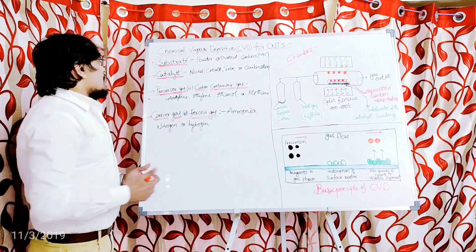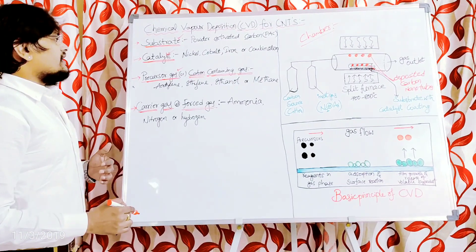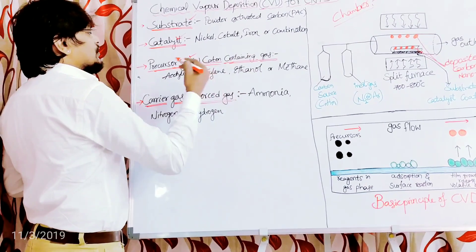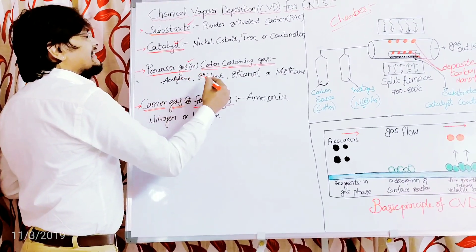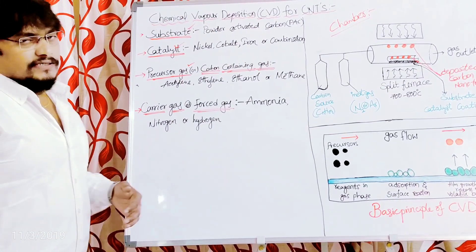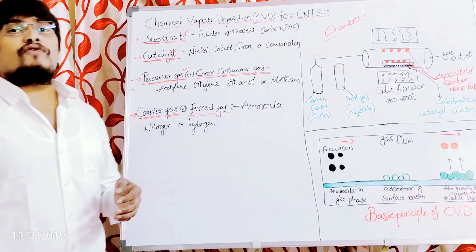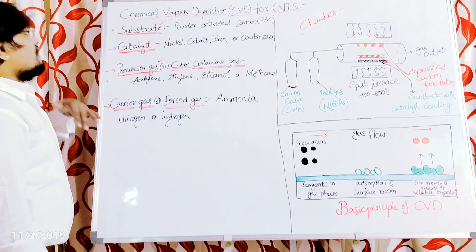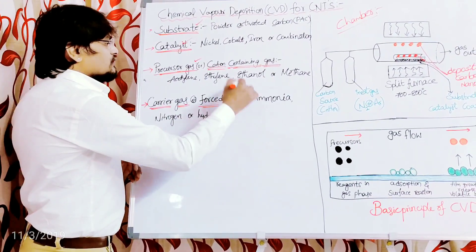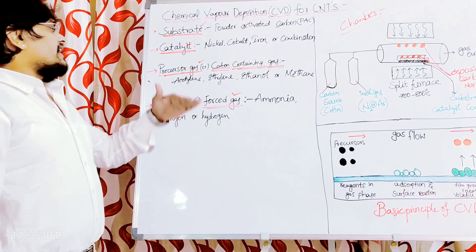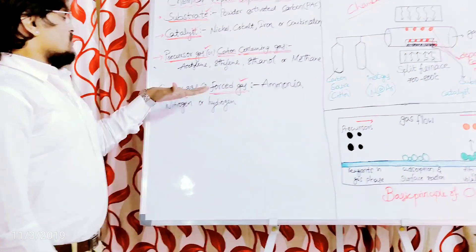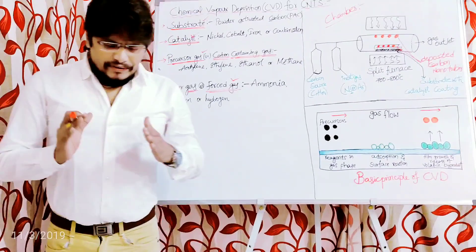The third substance important for the CVD process to synthesize carbon nanotubes is a precursor gas, or carbon-containing gas. Examples of the precursor gas include acetylene, ethylene, ethanol, or methane. The fourth substance required is the carrier gas or forcing gas, examples of which include ammonia, nitrogen, or hydrogen.